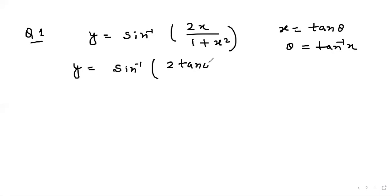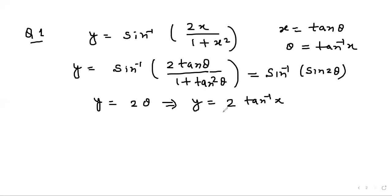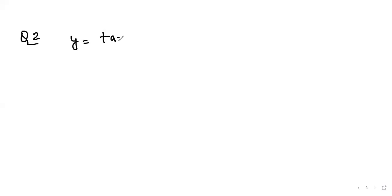Substituting, y = sin⁻¹(2 tan θ/(1 + tan² θ)). Since 2 tan θ/(1 + tan² θ) = sin 2θ, this becomes sin⁻¹(sin 2θ) = 2θ. Therefore y = 2θ = 2 tan⁻¹ x. Differentiating with respect to x, dy/dx = 2/(1 + x²), since d/dx of tan⁻¹ x is 1/(1 + x²).